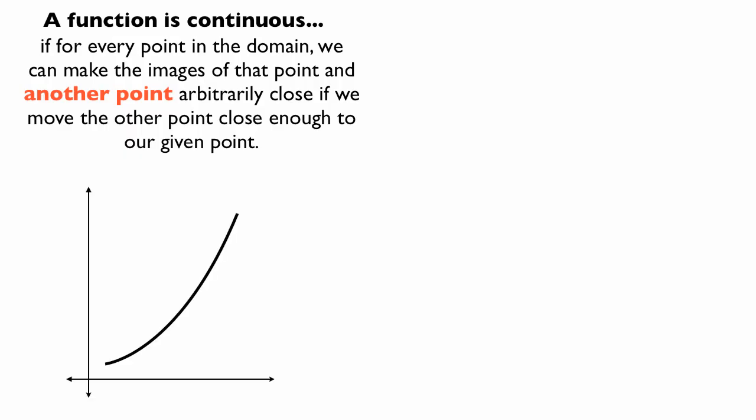Visually, this is what it means. We have a function, we're going to call it f. We have a point, we're going to call it p0 — that's our fixed point. The image of that point is going to be f of p0, the y-value — another way of saying it is an image or a mapping. We have another point we're going to call p, and the image of that point is going to be f of p. We want to examine the circumstances when f of p is going to be within a certain distance of f of p0.